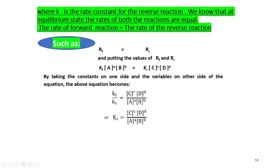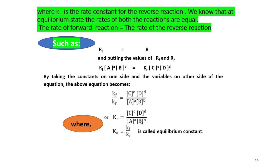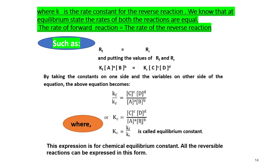So this is the equilibrium constant expression for a general reaction. KF/KR = KC, where KC is called the equilibrium constant. KC = [C]^c[D]^d / [A]^a[B]^b. This expression is for the chemical equilibrium constant, and all reversible reactions can be expressed in this form.